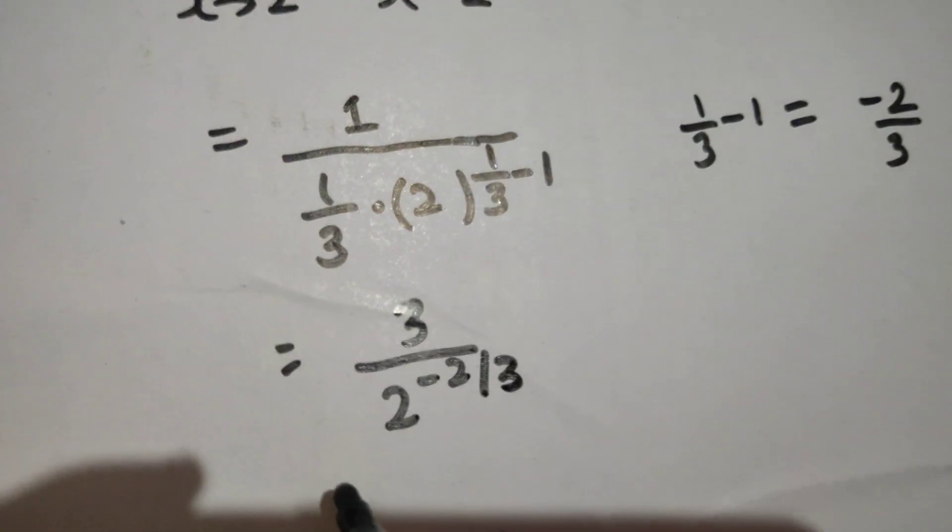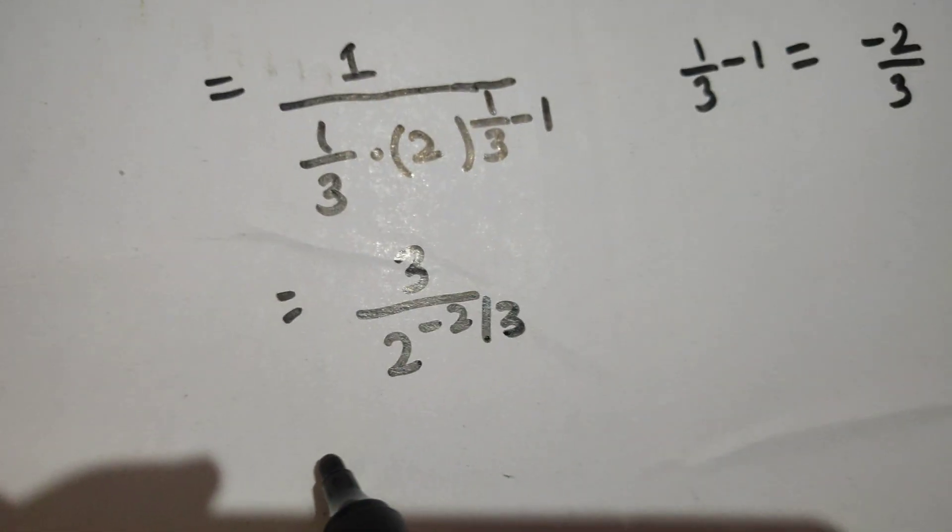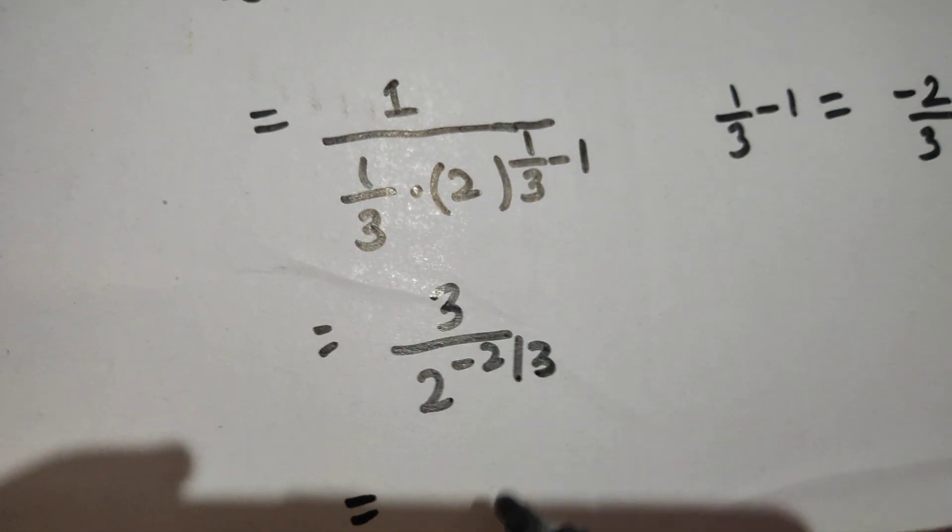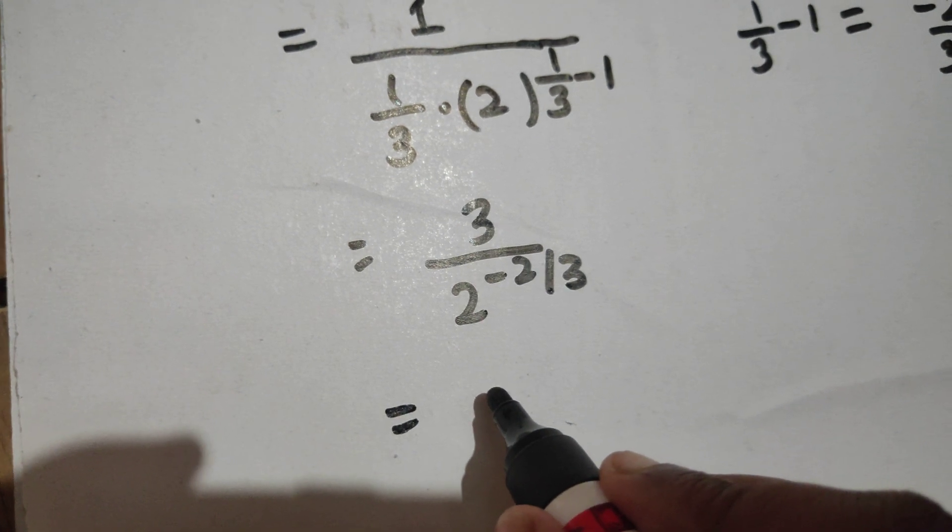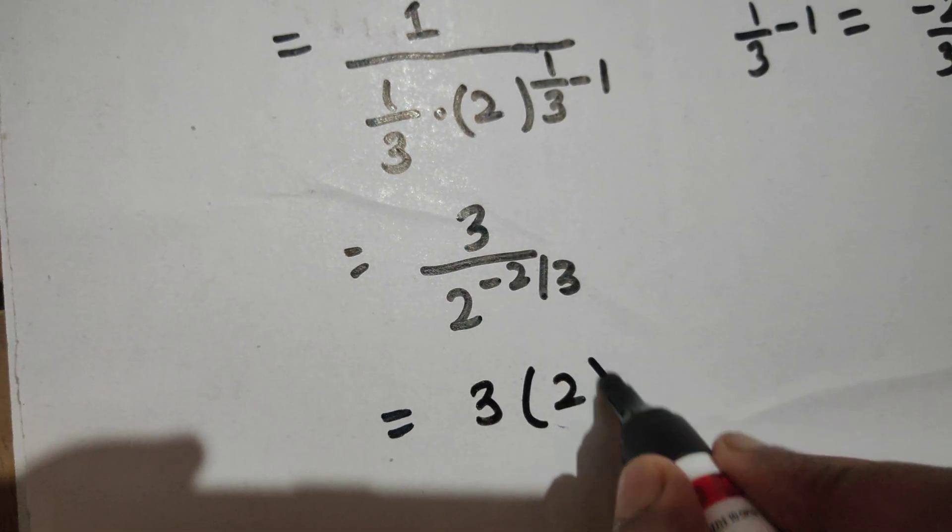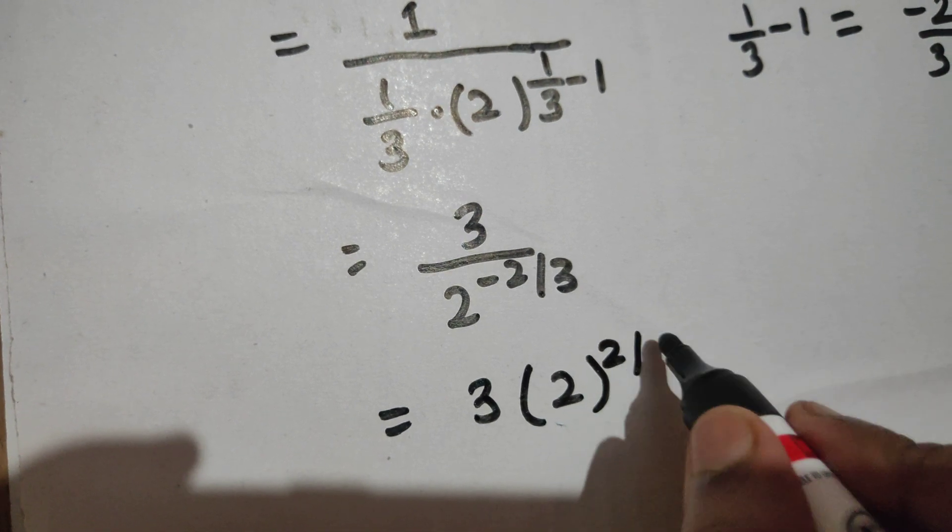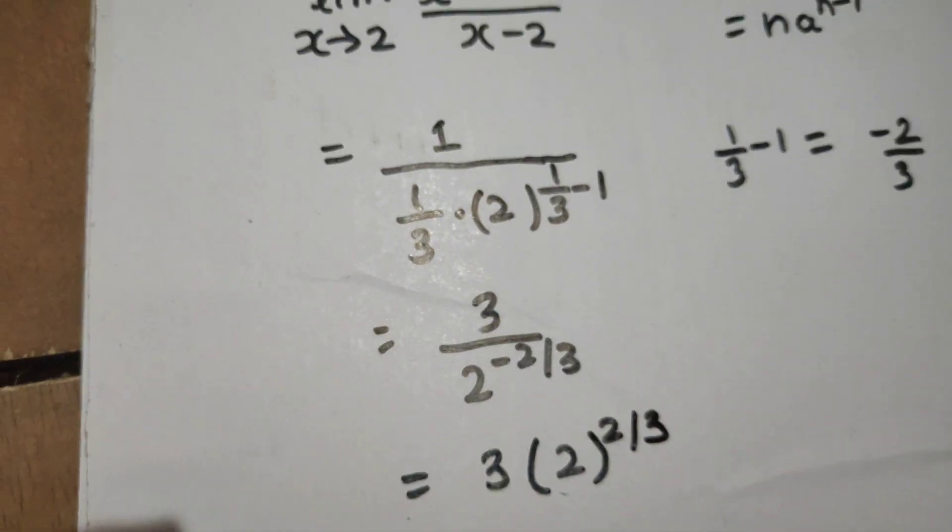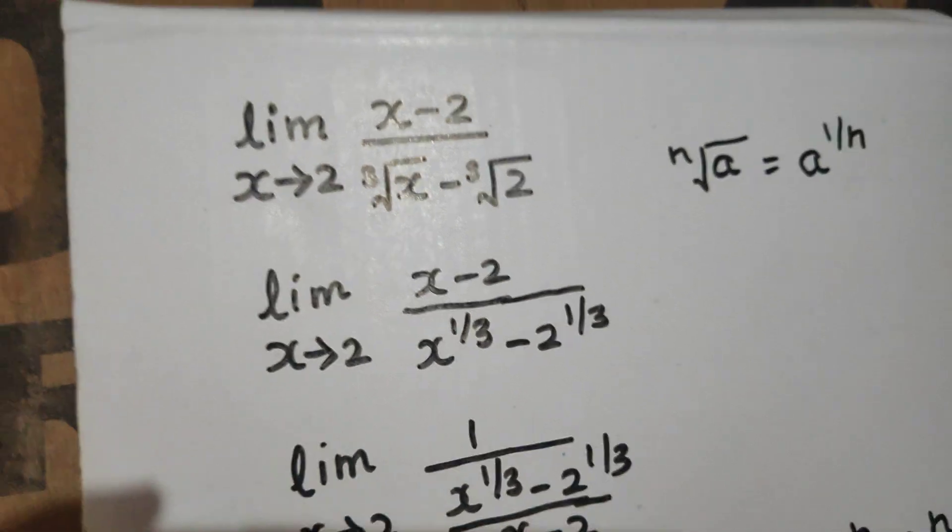Now you know that negative power, when it will go up this will become positive. So you will get 3 into 2 power 2/3. This is your answer.